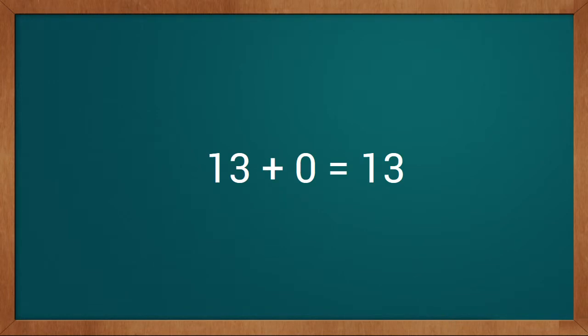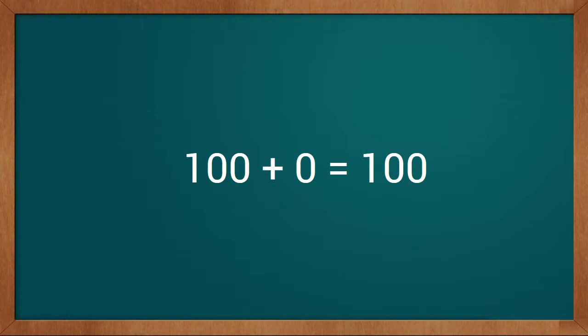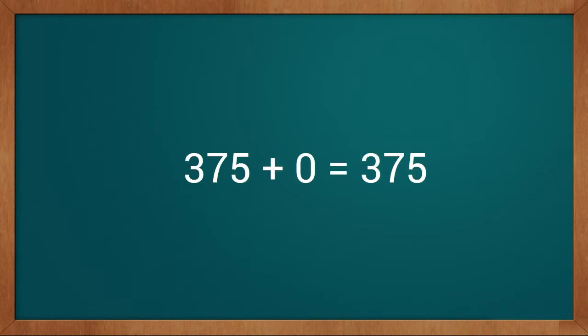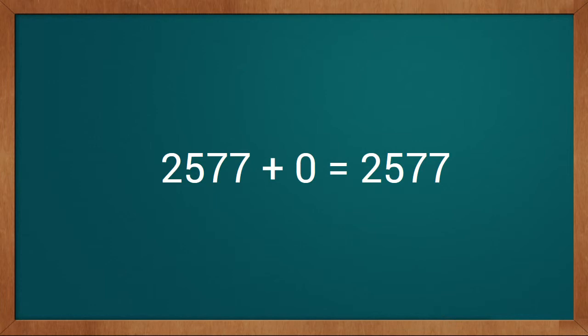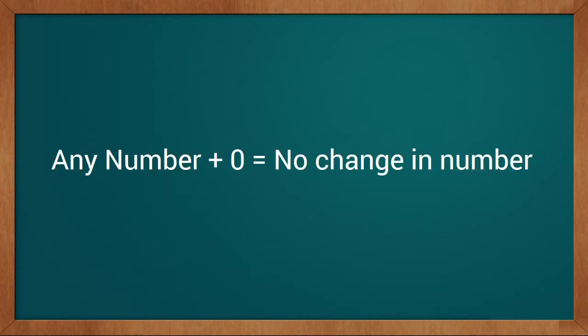Now we will see a few examples of addition with 0. 13 plus 0 equals 13. 100 plus 0 equals 100. 157 plus 0 equals 157. 375 plus 0 equals 375. 1,000 plus 0 equals 1,000. 2,577 plus 0 equals 2,577. This way we saw that if we add 0 to any number, there is no change in the number — we get the same number.